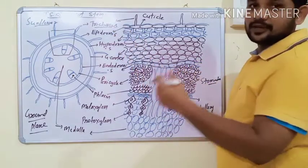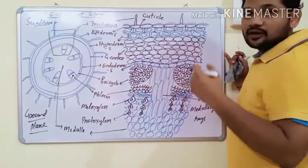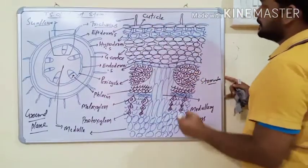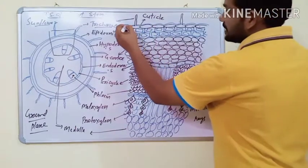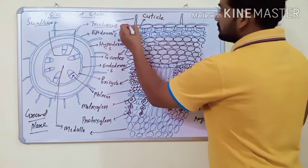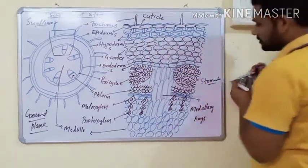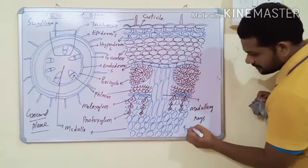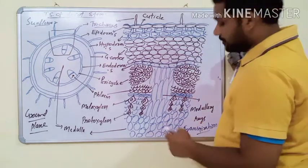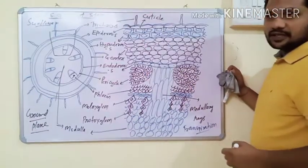Some epidermal cells possess trichomes, also called stem hairs. These trichomes are unicellular or multicellular and may be branched or unbranched, loose or stiff. The epidermis also possesses a cuticle layer. Both the cuticle and trichomes reduce the rate of transpiration, which is the loss of water in the form of vapor.